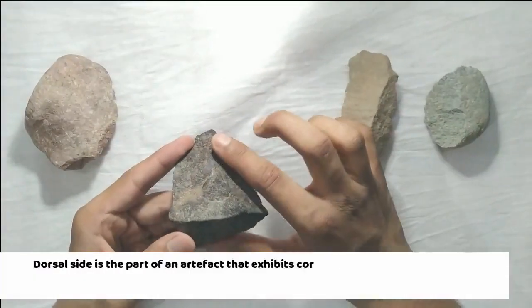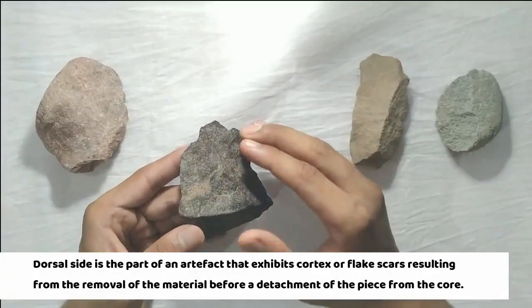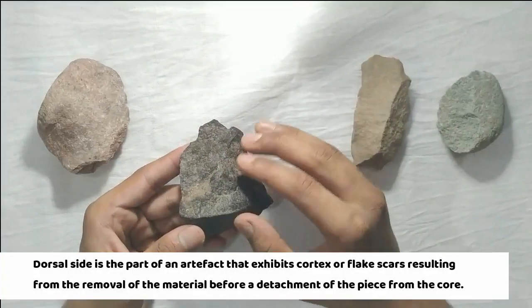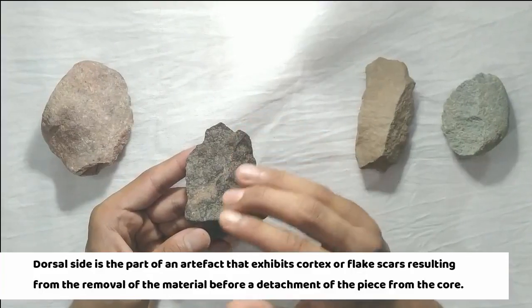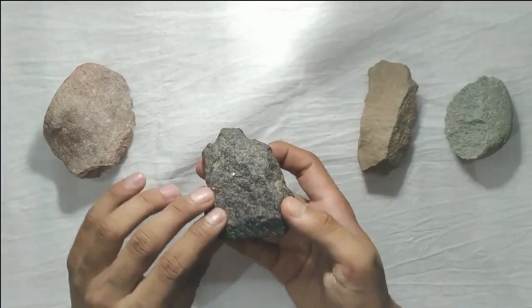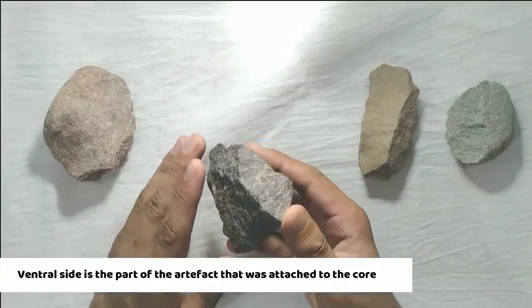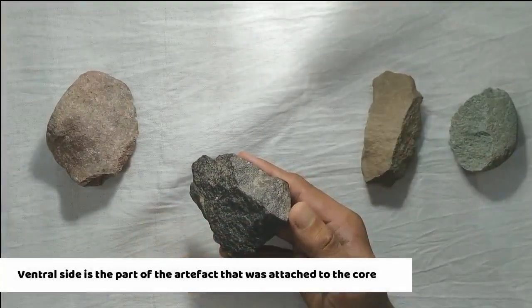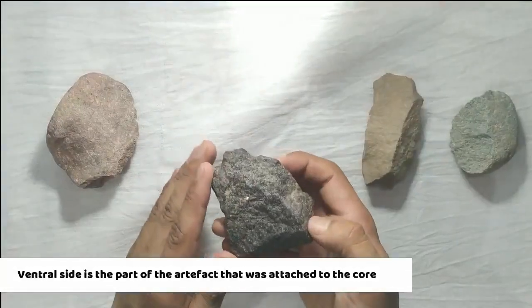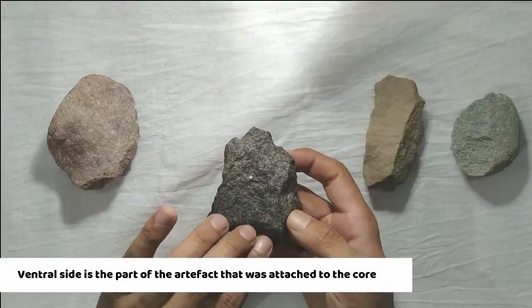The dorsal surface is the one which was towards the outside of a core before being detached and it sometimes contains the cortical portion. The ventral surface was the one which was towards the inner side of the core or the stone. The side usually has a positive or a negative flake scar.